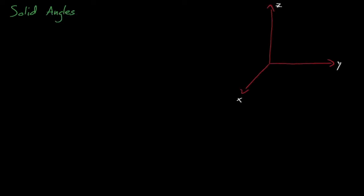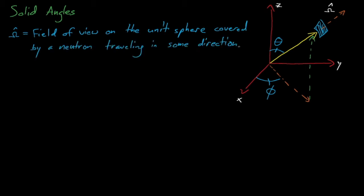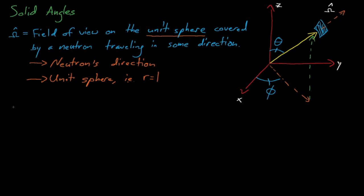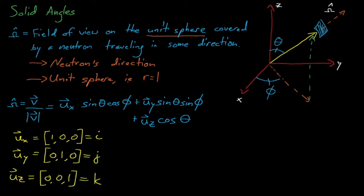Before we discuss scattering kinematics, let's introduce the concept of solid angles, which are represented using the omega symbol. The solid angle of a neutron describes the field of view that the neutron has projected onto some arbitrary unit sphere. In other words, the solid angle describes the neutron's direction. We can describe any location on a unit sphere as a combination of the phi angle, which is the projection of the location onto the x-y plane, and the theta angle, which is the angle between the vector and the z-axis. If we draw a vector from the origin towards any arbitrary location on the unit sphere, we can describe that vector by this combination of the phi and theta angles, where ux, uy, and uz are unit vectors along the x, y, and z axes.